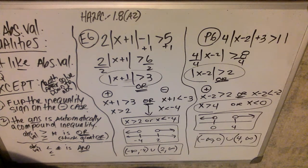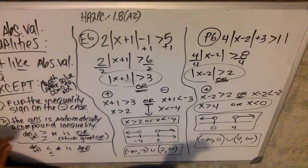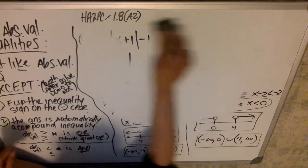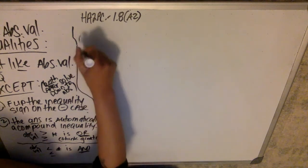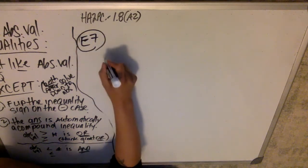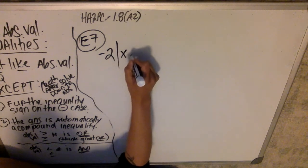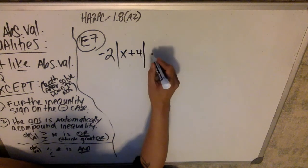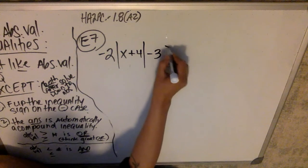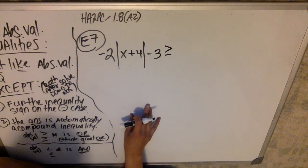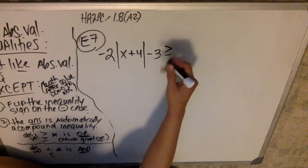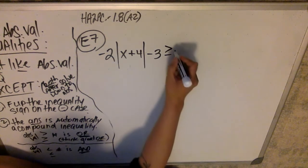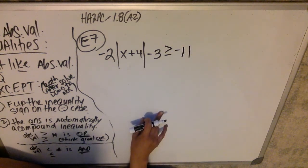Same concept. Now we'll walk through example seven, which is a bit trickier. I can't worry about 'and' or 'or' until I solve down to the absolute value. Adding three to both sides, I get negative two times the absolute value is greater than or equal to negative eight. Dividing by negative two — notice dividing by a negative means I flip the inequality sign — I get the absolute value of x plus four is less than or equal to positive four.